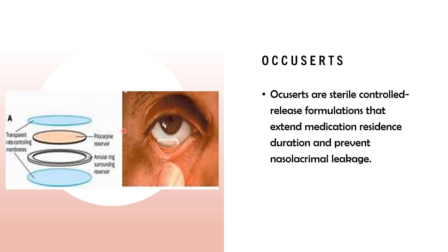An Ocusert roughly contains four parts. The two outermost are transparent release-controlling membranes. The inner layer contains the drug, so we can call it the drug reservoir. There is also a ring whose major function is to provide flexibility and support to the Ocusert, keeping the membranes and drug reservoir in place.